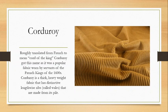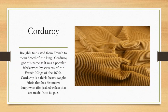Our first piled cotton is corduroy, a very popular and recognizable fabric. Corduroy roughly translates from French to mean 'cord of the king,' named because it was popular among servants of French kings in the 1600s. Corduroy is thick, heavyweight, and has distinctive lengthwise ribs called whales made from its cut pile. The whales can range in width — quite wide or quite narrow — but always run along the length grain.